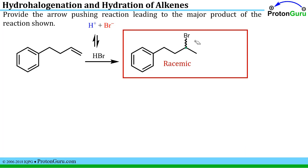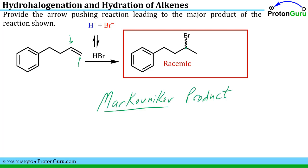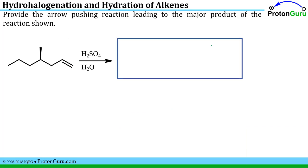Notice the net result: we added a hydrogen to one carbon and a bromine to the other. This is the Markovnikov addition product. The Markovnikov product is one in which the more electronegative atom ends up on the more substituted carbon. In this case, Br is added to the more substituted carbon and H to the less substituted carbon. Bromine is the more electronegative atom, so this is the Markovnikov product.